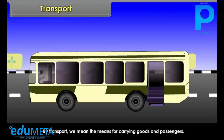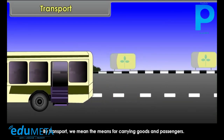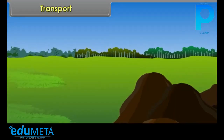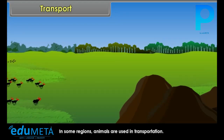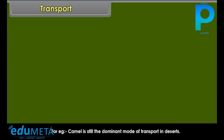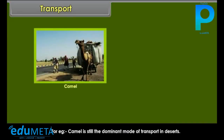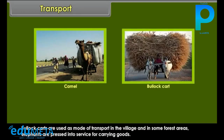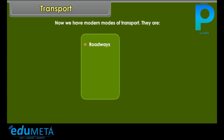By transport, we mean the means for carrying goods and passengers. In some regions, animals are used in transportation. For example, the camel is still the dominant mode of transport in deserts. Bullock carts are used as a mode of transport in the village, and in some forest areas, elephants are pressed into service for carrying goods. Now we have modern modes of transport: roadways, railways, waterways, and airways.